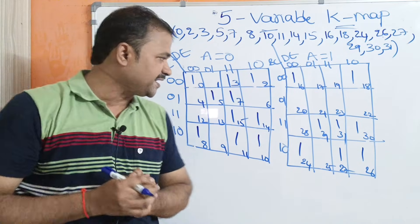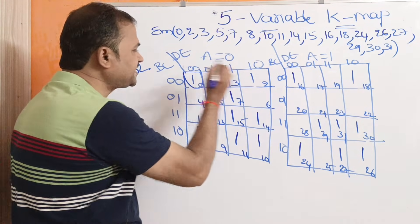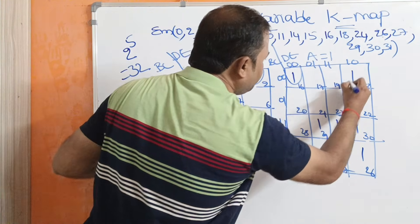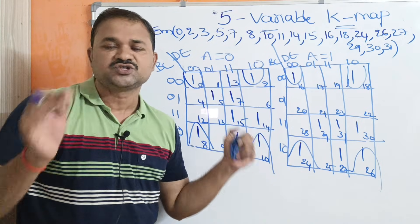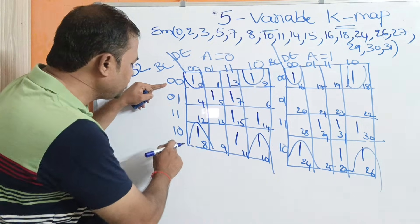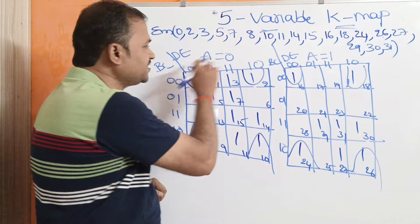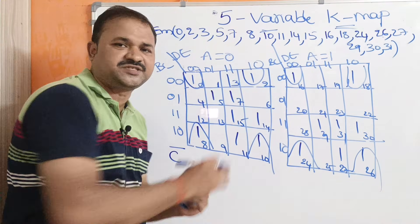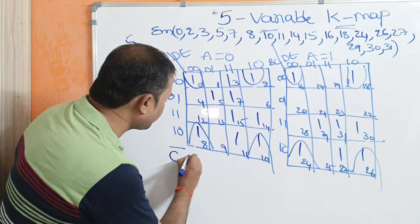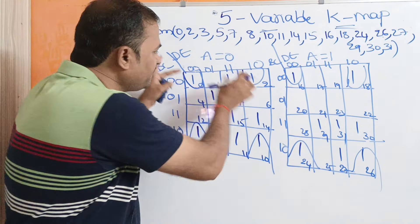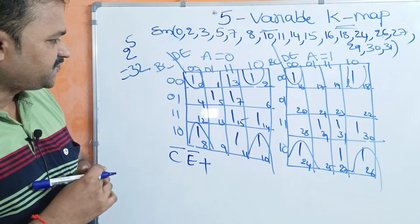Here at the opposite corners we have ones in both corners of the map, so we can combine these eight cells into one group. Now let us write the minterm for that group. Here A value is changing from 0 to 1, so there is no need to consider A. The combination is 0,0,1,0 — the second 0 is common, which is C̄. Also, the fourth position 0 is common, which is Ē. So this group of eight cells represents the minterm C̄Ē.